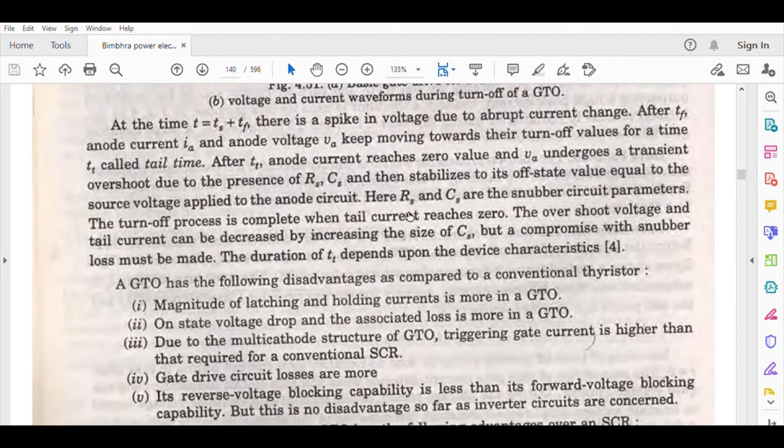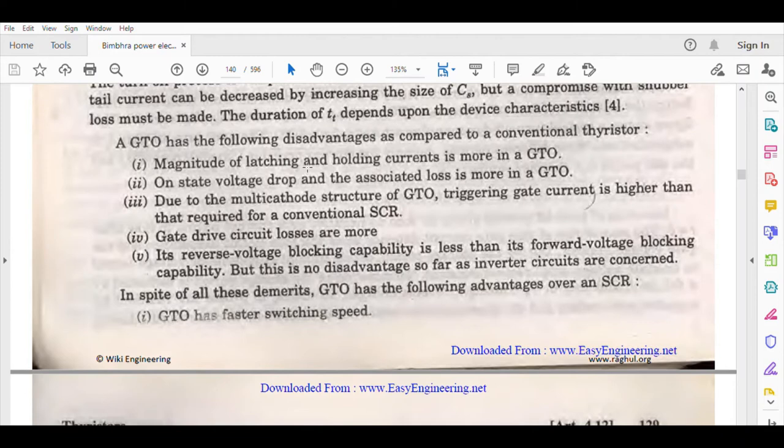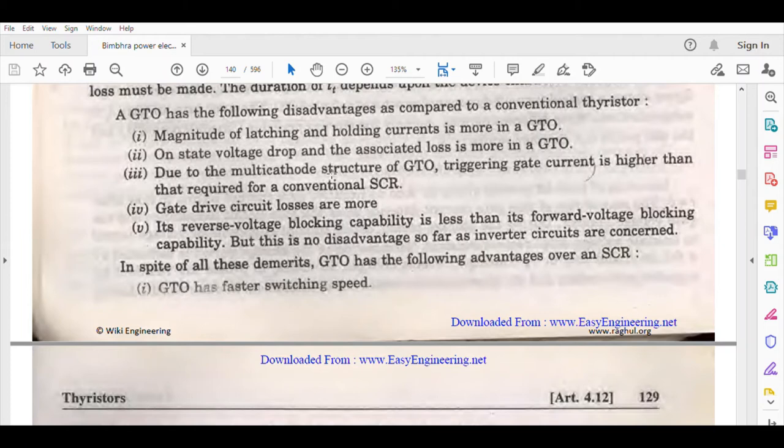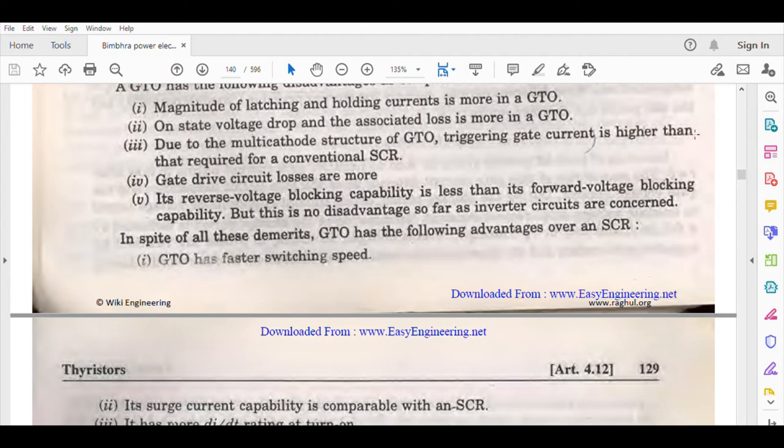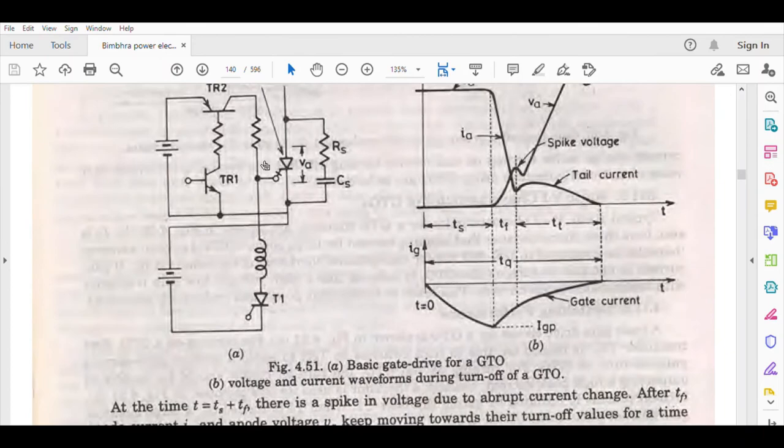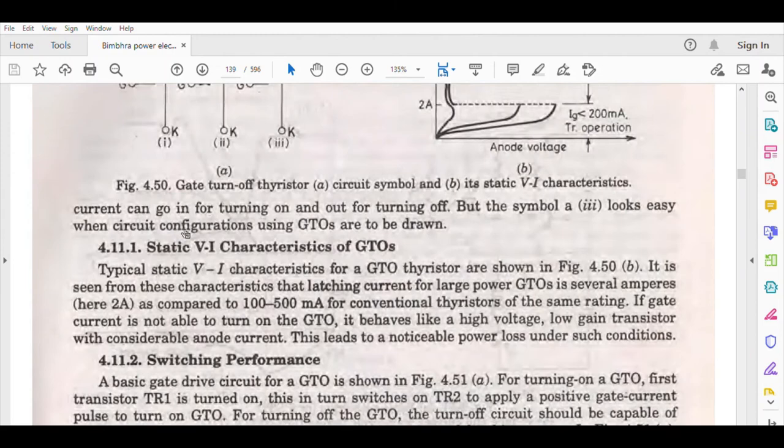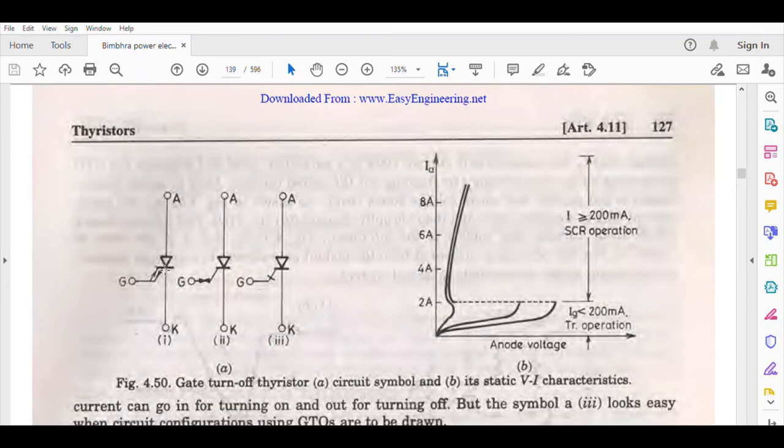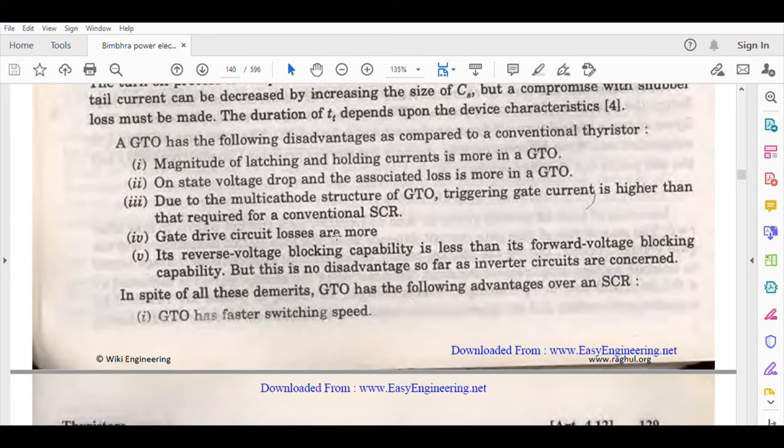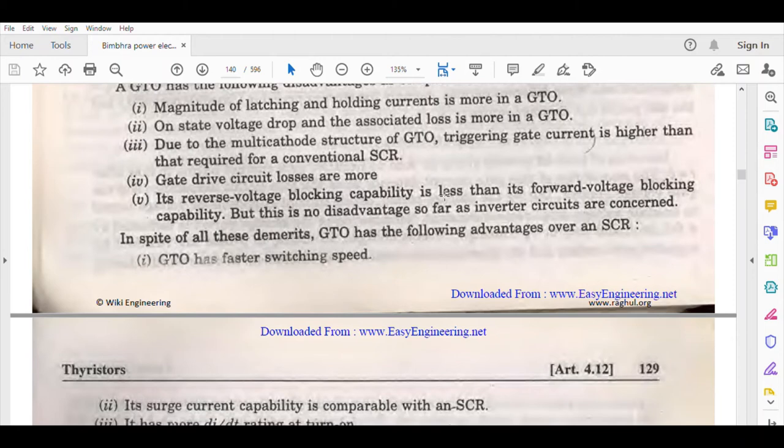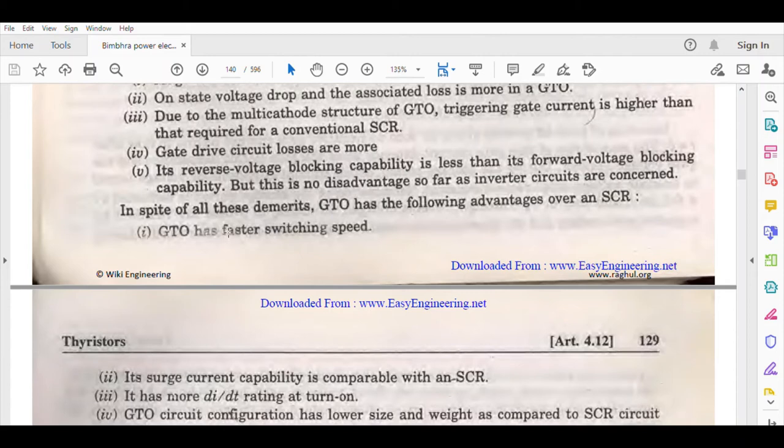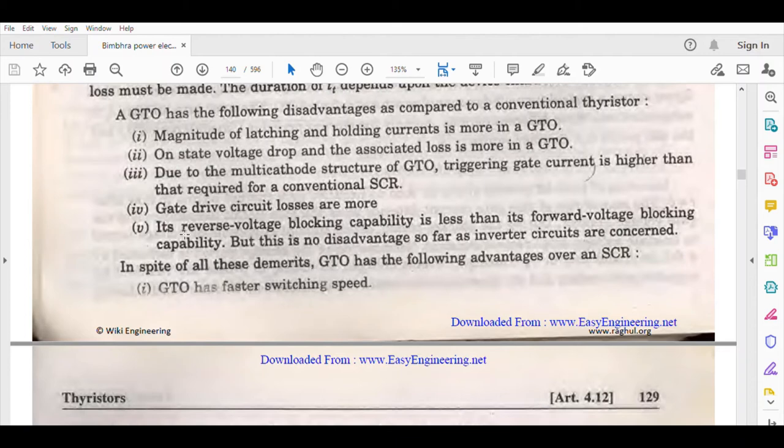GTO has the following disadvantages compared to conventional thyristors: magnitude of latching current and holding current is more, on-state voltage drop is more, power loss is more because it needs more voltage and current. Due to the multi-cathode structure of GTO, triggering gate current is higher than conventional SCR.